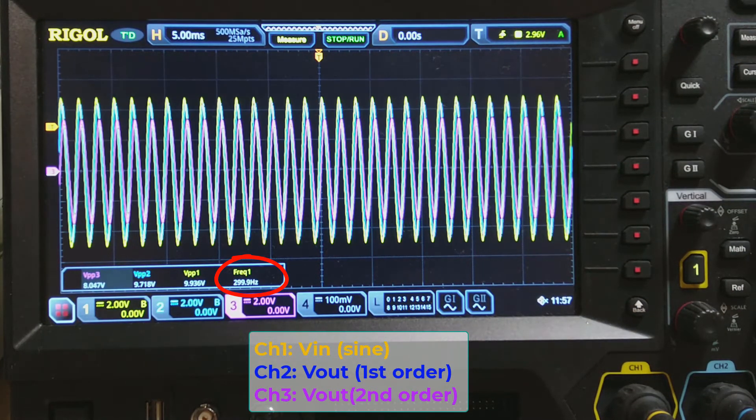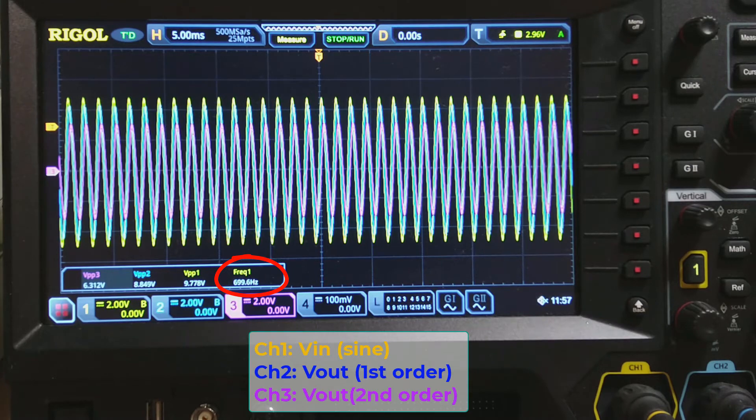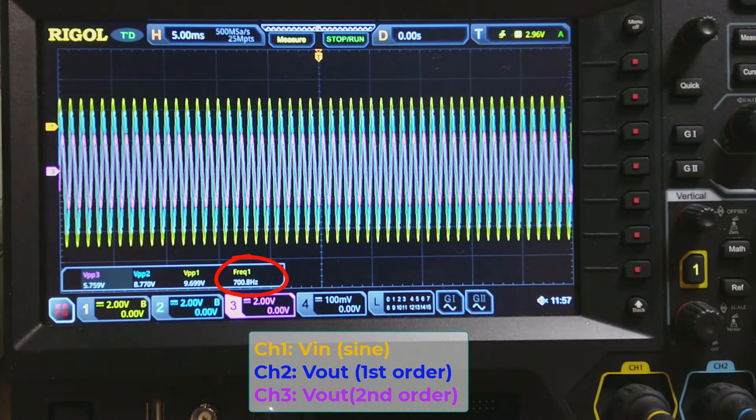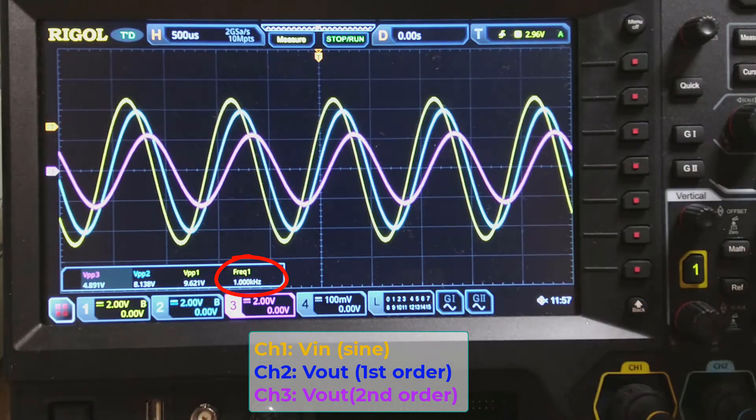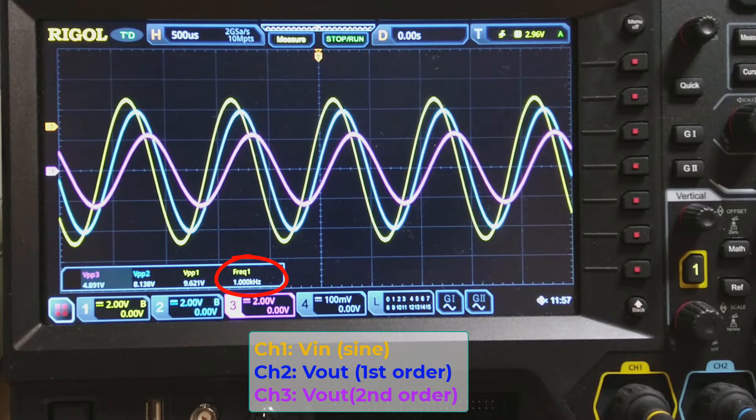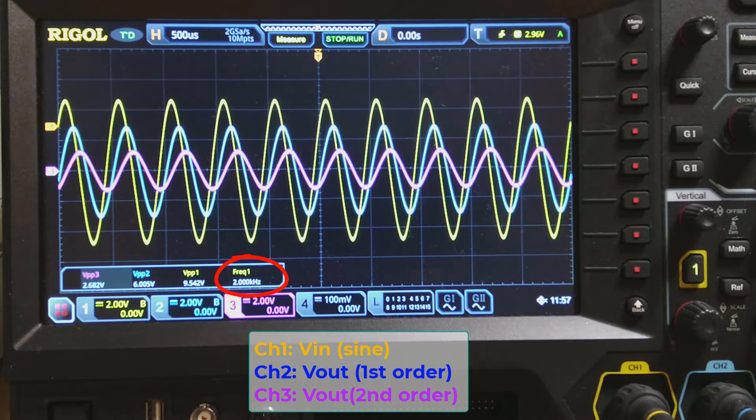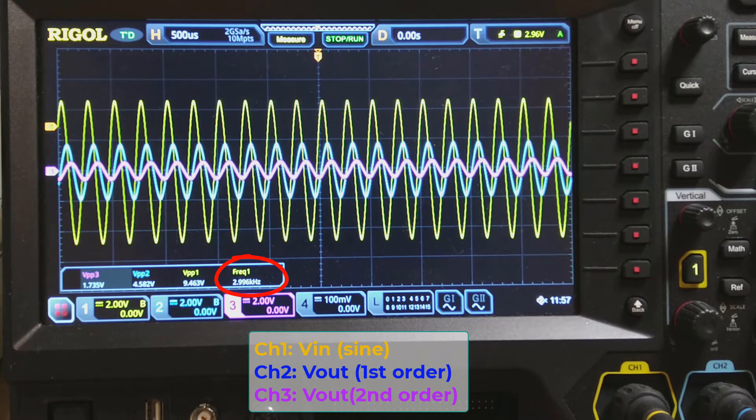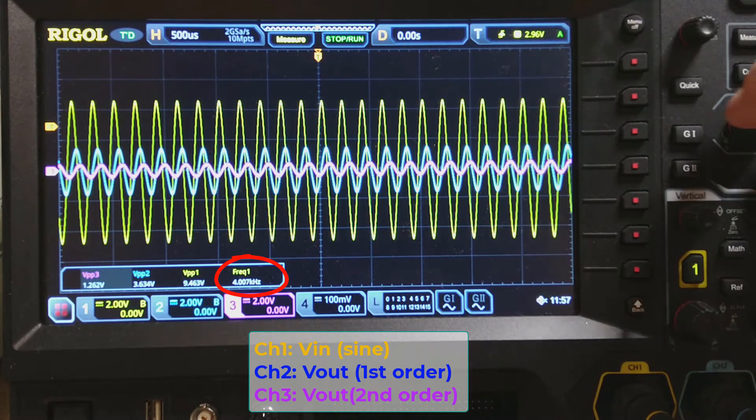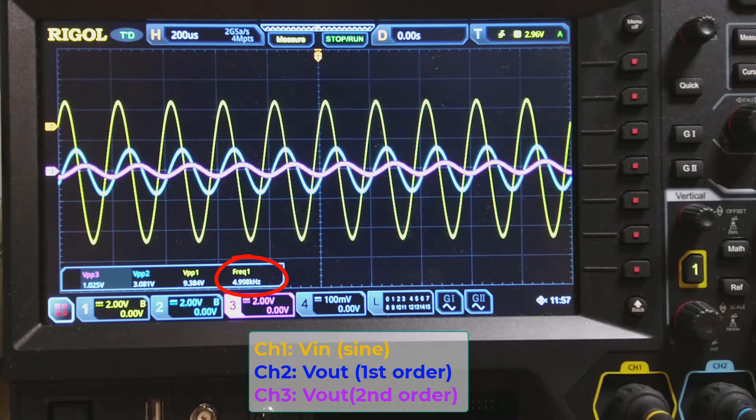As the frequency increases, you can see the difference between channel 2 and channel 3. At 1 kHz or above, the difference becomes more significant. The second-order low-pass filter in channel 3 has smaller magnitude and more phase lagging compared with channel 2. The reason has been explained in the previous lectures.